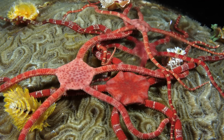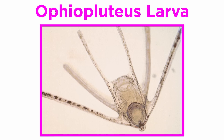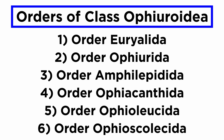In most species, sexes are separate and fertilization is external. The fertilized eggs may develop to become eight-armed ophiopluteus larvae, which metamorphosize into juveniles and then adults.